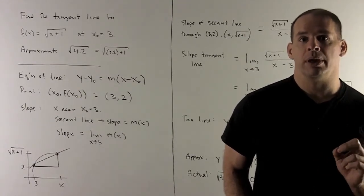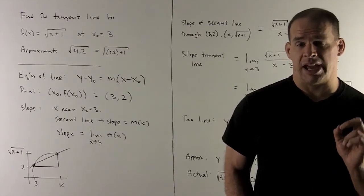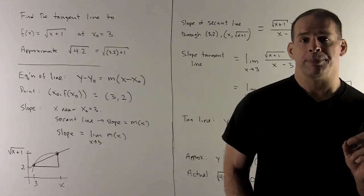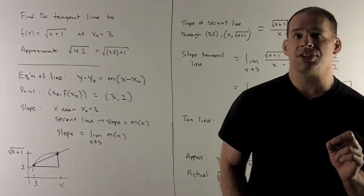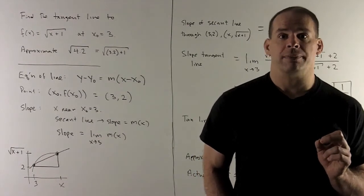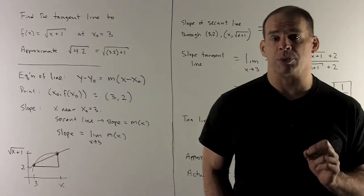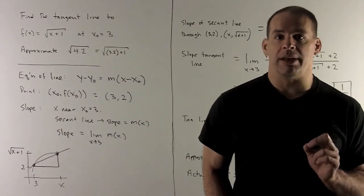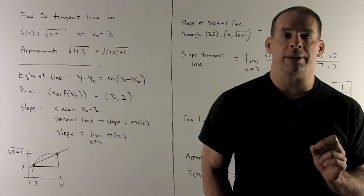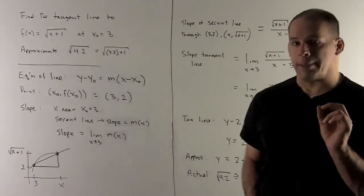Our slope, how do we get that? Our procedure for getting the slope for the tangent line is we're going to take the secant lines that go through our point (3, 2) and another point on the graph, say x, so it's going to be (x, √(x+1)). Then we're going to take the limit as x gets driven down to 3 on the slope function.